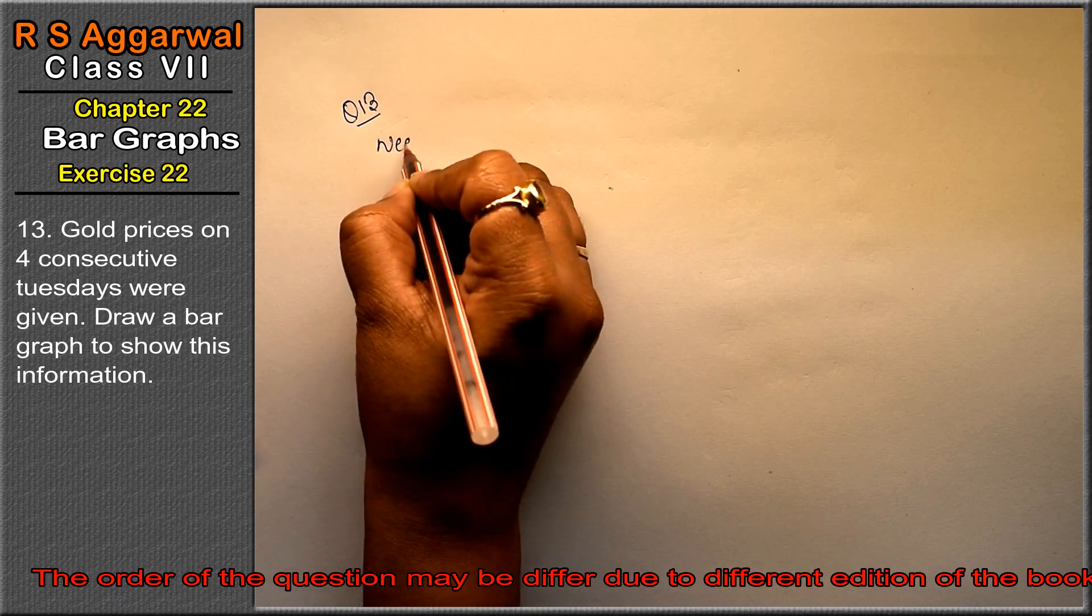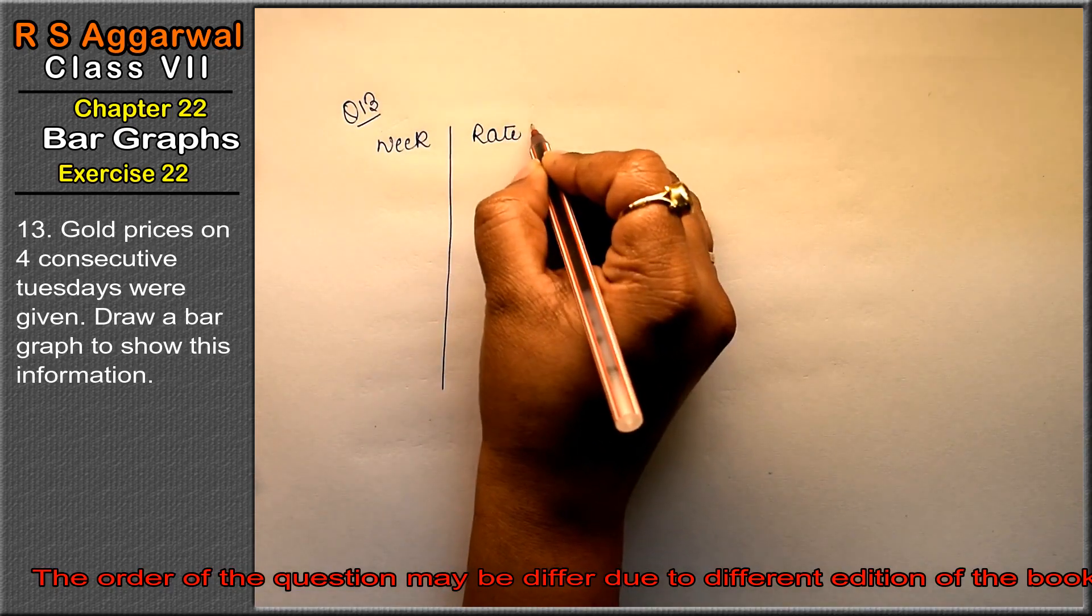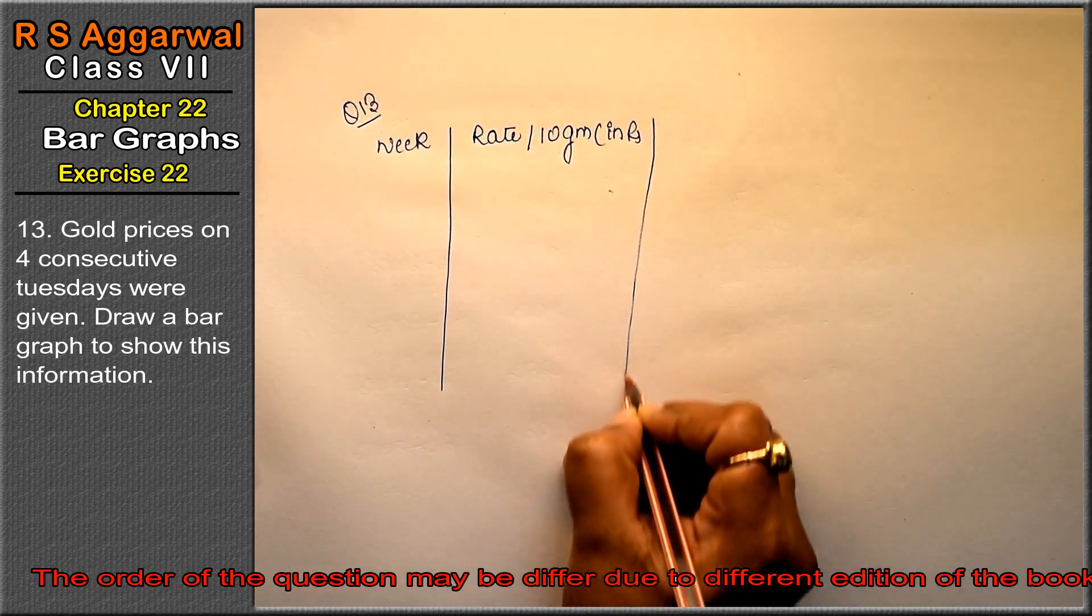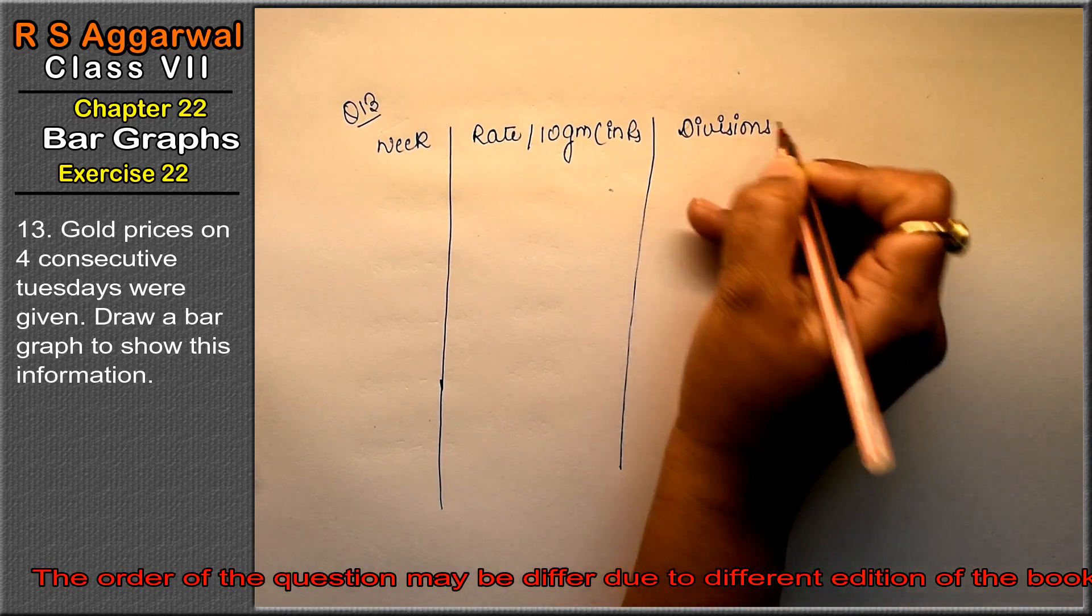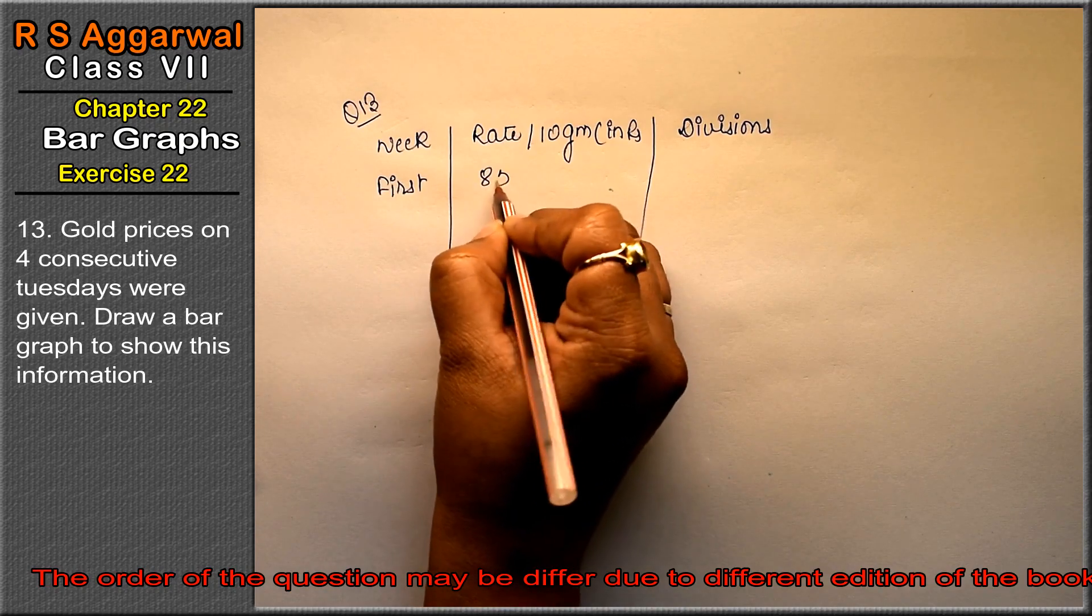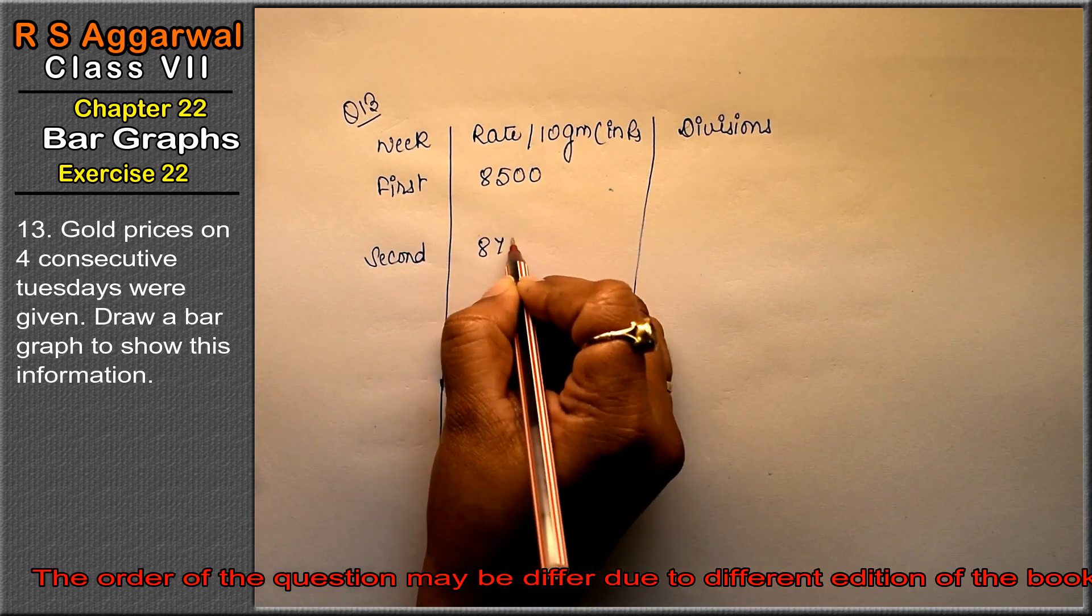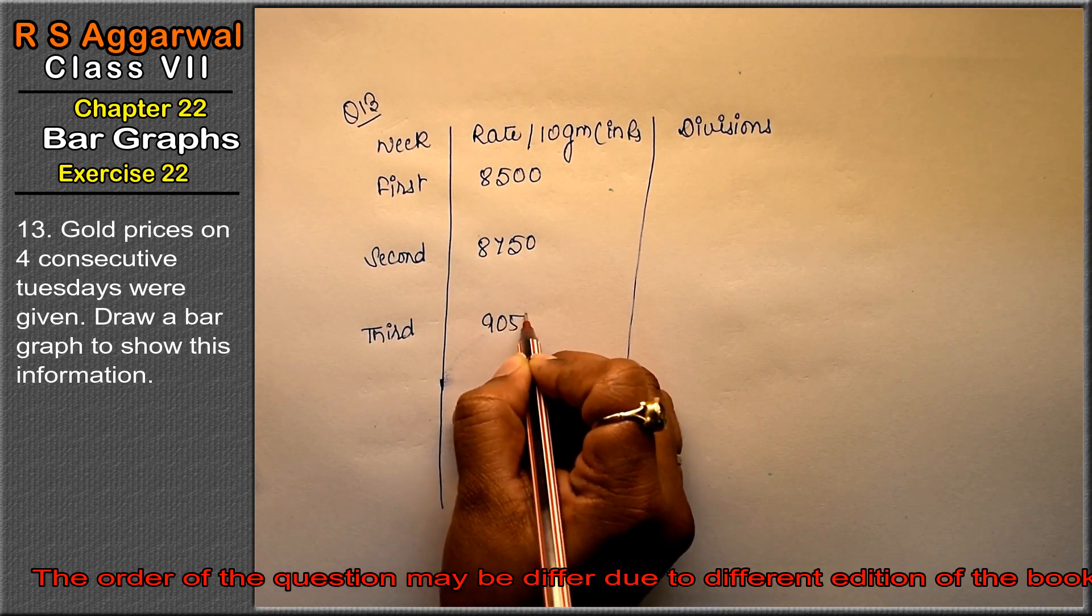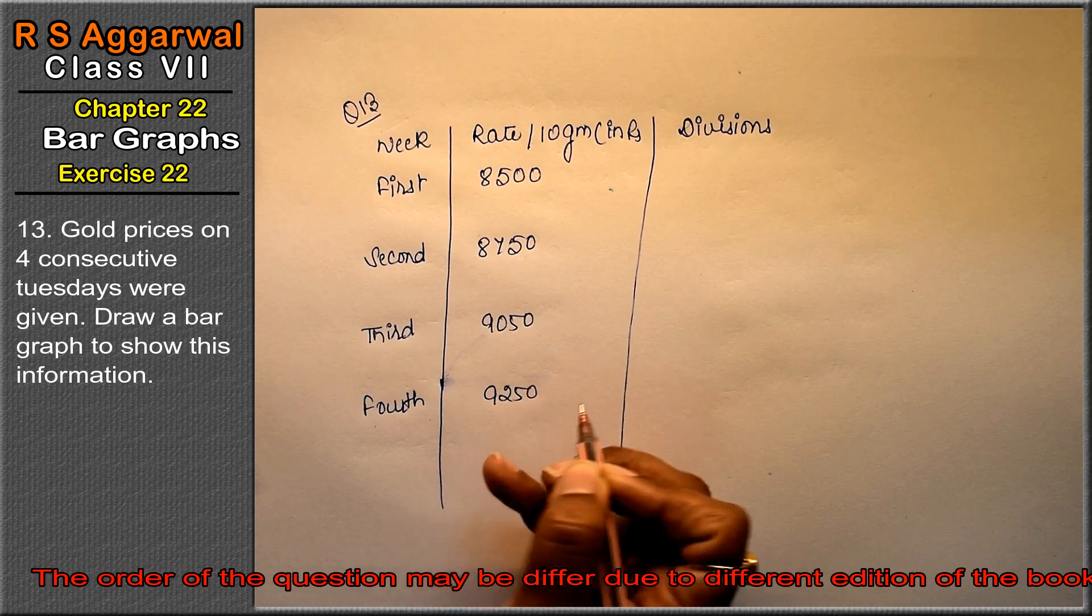The first column is week and this is the rate per 10 grams in rupees and this is our last division. The first week is 8,500, second week is 8,750, third week is 9,050 and fourth week is 9,250.